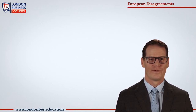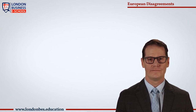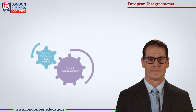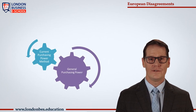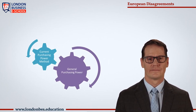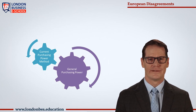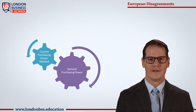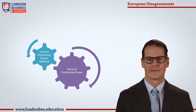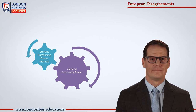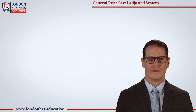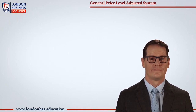The following are the generally accepted methods of accounting for price level changes: one, the current purchasing power method or general purchasing power method (CPP or GPP method); two, the current cost accounting method (CCA method) — also referred to as the general price level adjusted system.